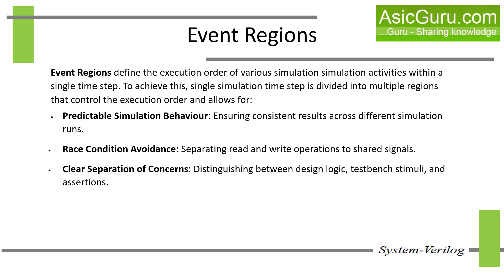What are event regions in SystemVerilog? Event regions define the execution order of various simulation activities within a single timestamp. In digital simulations, multiple processes often interact concurrently and they can assign values to the same signal at the same time or they may depend on each other. Without a structured execution order, these interactions may lead to race conditions. So to handle these race conditions, SystemVerilog divides each simulation time slot into multiple ordered regions, which ensures that events are executed in a deterministic sequence.